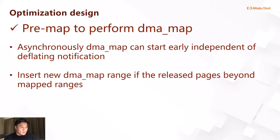The third optimization is pre-mapping. Async DMA map can start early, independent of deflate notifications. QEMU triggers async DMA map step by step. If a new notification from DeflateVQ arrives containing released page information, QEMU checks if those pages are already in the mapped range. If not, it maps those pages and grants access to the guest. This optimization can speed up the async DMA map process.